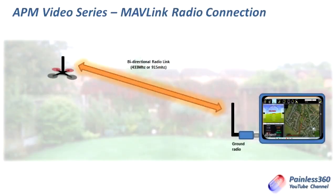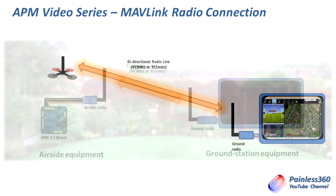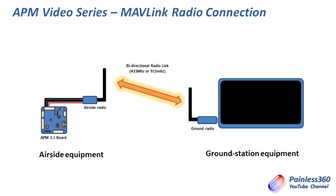So how does it actually work? It lets you connect and maintain a connection to the craft while it's flying. There are two versions: 433 MHz, which tends to be used in Europe and the UK, and 915 MHz, which tends to be used in North America — though each country has its own regulations. On one side you have the APM 3.1 with the air-side radio plugged in and powered by it; on the other the ground radio plugs into USB and you click connect in Mission Planner.